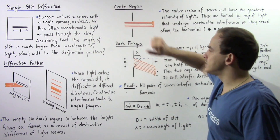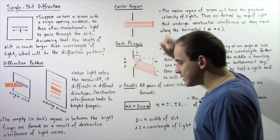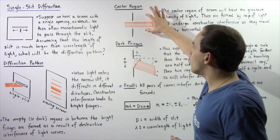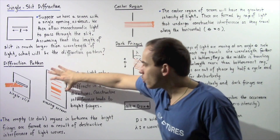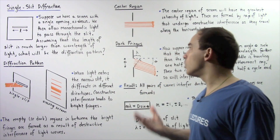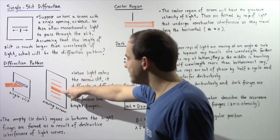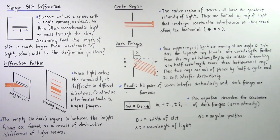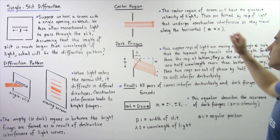Here we have the single slit — our opening — and the rays of light passing directly through it. Some of these rays will travel in different directions. We're examining the rays of light that are traveling along the horizontal axis directly toward the center of the screen. If these rays of light interfere constructively, that will lead to a bright fringe. It turns out that the center region of the screen will have the greatest intensity of light, meaning the brightest fringe is directly at the center. These are formed by rays that undergo constructive interference traveling along the horizontal, that is, when the angle with respect to the horizontal is zero.